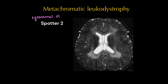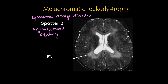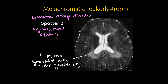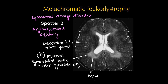This case is a white matter disorder known as metachromatic leukodystrophy, which is a lysosomal storage disorder where there will be deficiency of aryl sulfatase A. Here we can see bilateral symmetrical white matter hyperintensities on T2 weighted images. This will also show a tigroid pattern with sparing of subcortical U fibers — alternating hypo and hyperintensities.